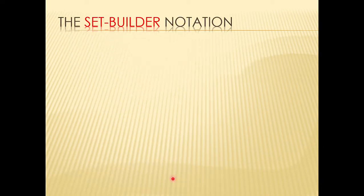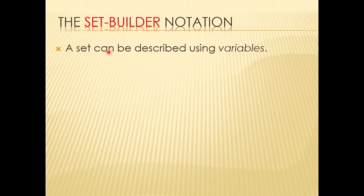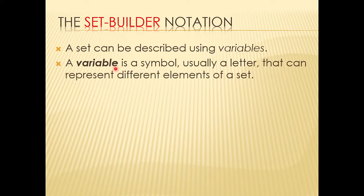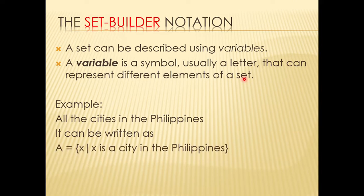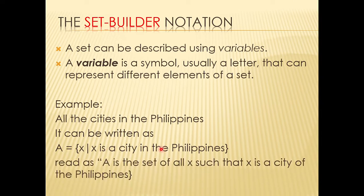Next, the third method is the set builder notation. A set builder notation describes a set using variables. A variable is a symbol, usually a letter, that can represent different elements of a set. For example, all the cities in the Philippines can be written as: set A equals x such that x is a city in the Philippines. You read it as 'A is the set of all x such that x is a city of the Philippines.'